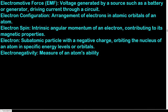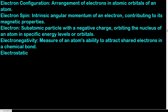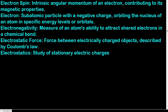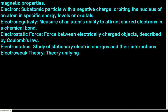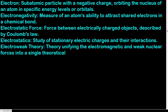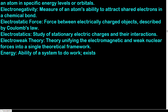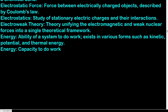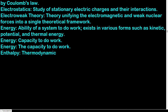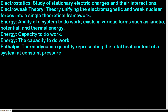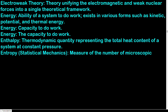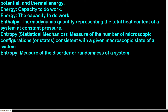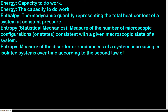Electronegativity: measure of an atom's ability to attract shared electrons in a chemical bond. Electrostatic force: force between electrically charged objects, described by Coulomb's law. Electrostatics: study of stationary electric charges and their interactions. Electroweak theory: theory unifying the electromagnetic and weak nuclear forces into a single theoretical framework. Energy: ability of a system to do work, existing in various forms such as kinetic, potential, and thermal. Enthalpy: thermodynamic quantity representing the total heat content of a system at constant pressure. Entropy: measure of the disorder or randomness of a system, increasing in isolated systems over time according to the second law of thermodynamics.